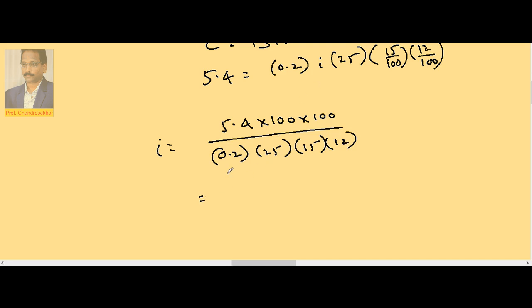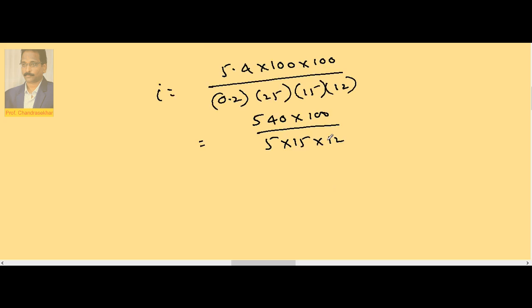So this is equal to 25 into 0.2 is 5. So 5.4 into 100 divided by 5 into 15 into 12. With 12, 4 goes 48. Remaining is 60. So 45 times. This 15, 15 threes. This 5, 20 times. So remaining is 60 ampere.